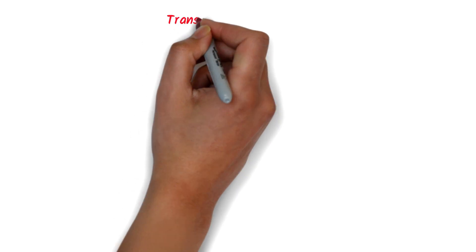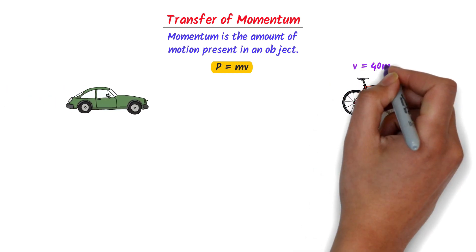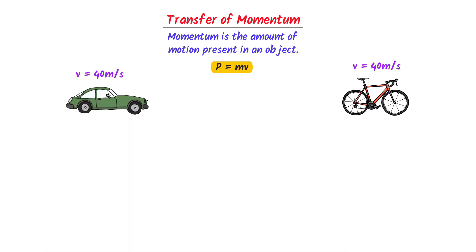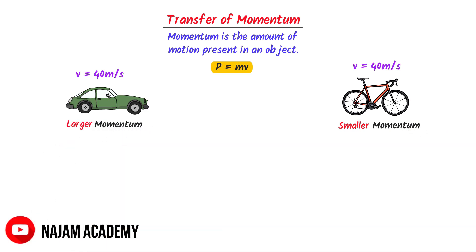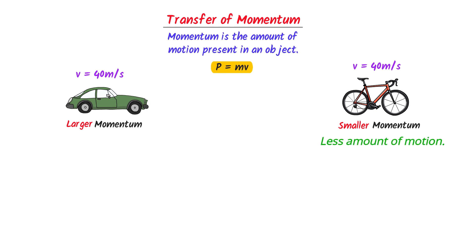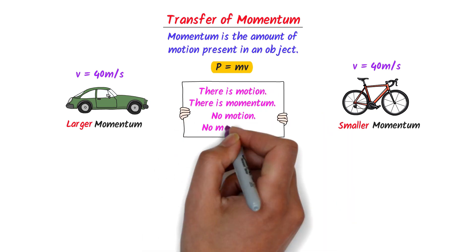Firstly, we should learn about the transfer of momentum during collision. We know that momentum is the amount of motion present in an object. Its formula is P is equal to M into V. For example, consider a moving bicycle and a moving car. Let they both move with a velocity of 40 meter per second. The momentum of the bicycle is smaller and that of the car is larger due to the difference in size. Simply remember that when there is motion, there is momentum. No motion means no momentum.